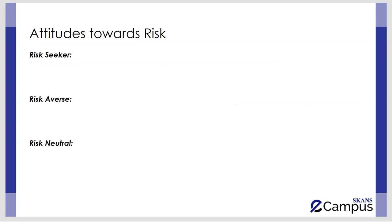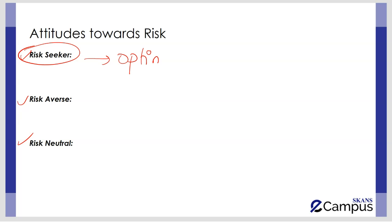Let's discuss the attitudes towards risk and uncertainty. There are three attitudes towards risk: risk seeker, risk averse, and risk neutral. A risk seeker is a person or manager who likes to take a lot of risk and always looks at the best possible outcome, no matter how small the chance of that best possible outcome occurring. This person can be called an optimist.